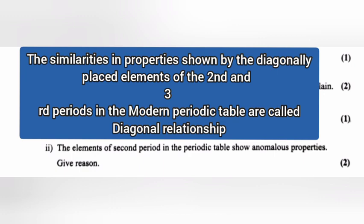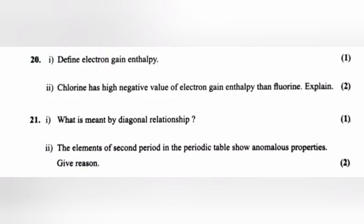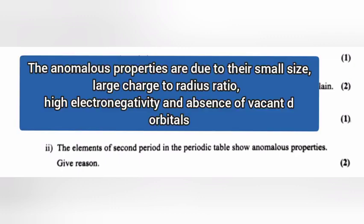Question 21.2: The elements of the second period in the periodic table show anomalous properties. Give reason. Answer: The anomalous properties are due to their small size, large charge to radius ratio, high electronegativity, and absence of vacant d orbitals.